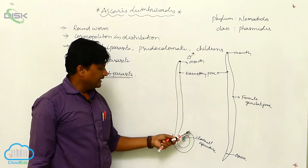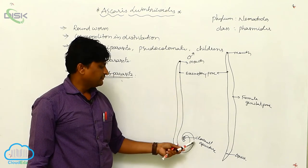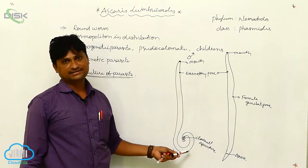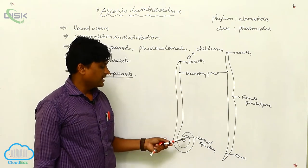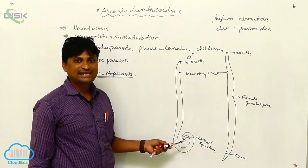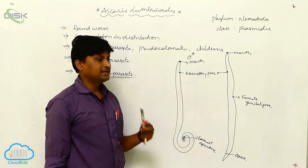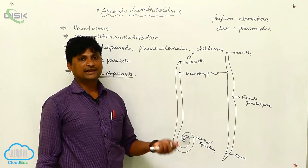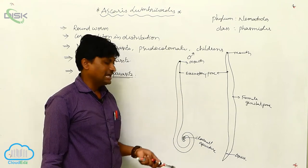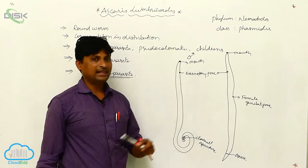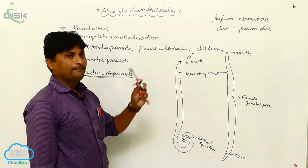In the male, the main important character is the posterior part of the tail. A curved tail is present, which is a very important characteristic. There is a cloacal aperture. This is characteristic of the male one.